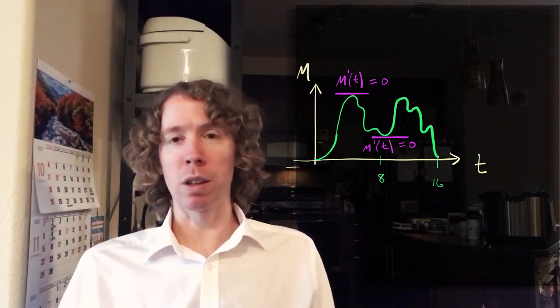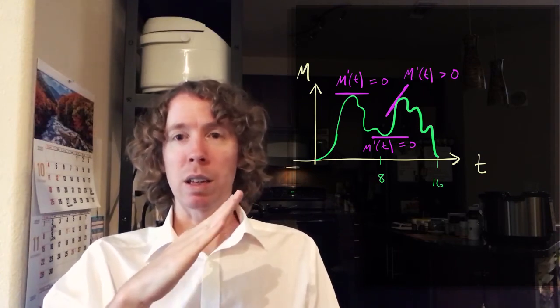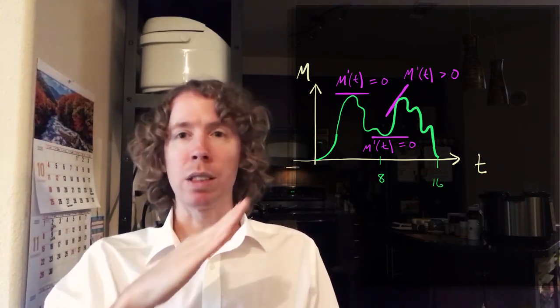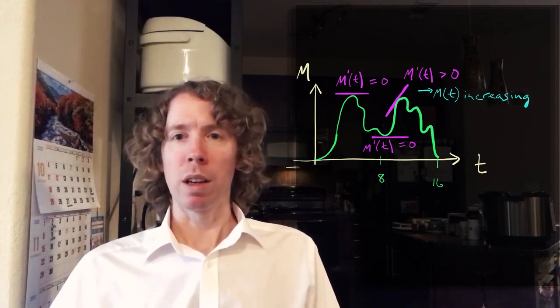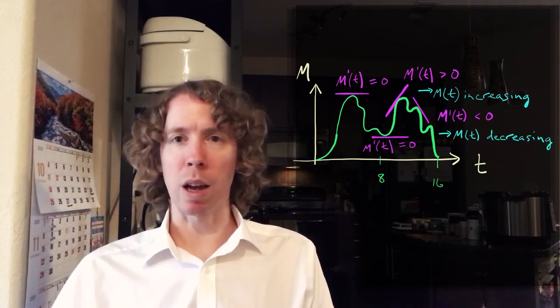Another thing it can tell us quickly is if that slope of the tangent line is positive, that tells us the function is increasing at that point. And if the derivative is negative, it tells us that the function is decreasing at that point.